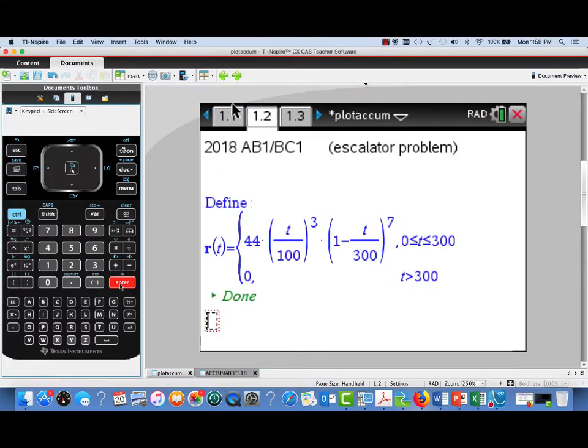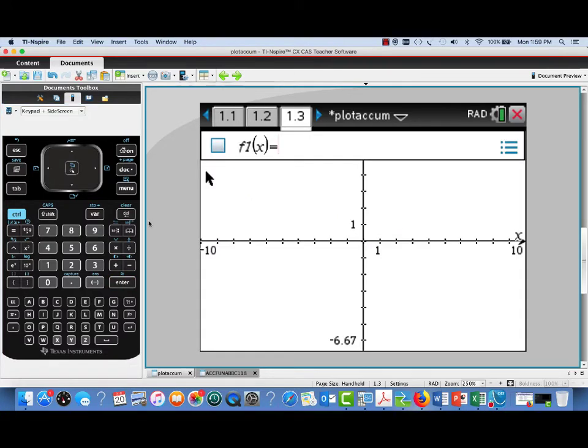It was a problem involving an escalator, and we were given a rate function at which people were entering the line in people per second for the escalator. This rate function is defined here on the TI INSPIRE page in an interactive math box.